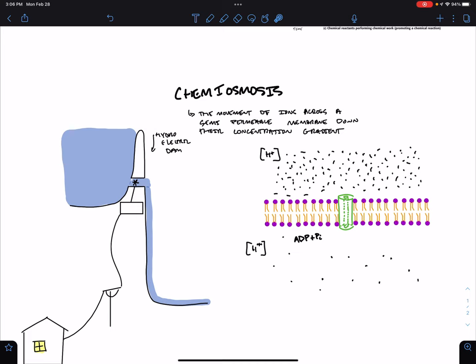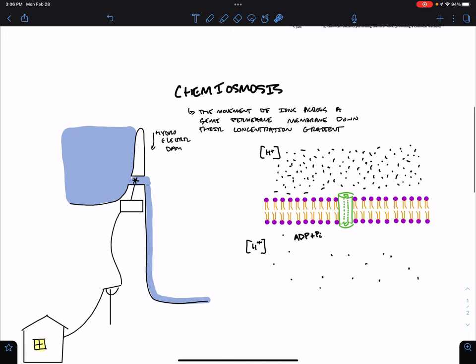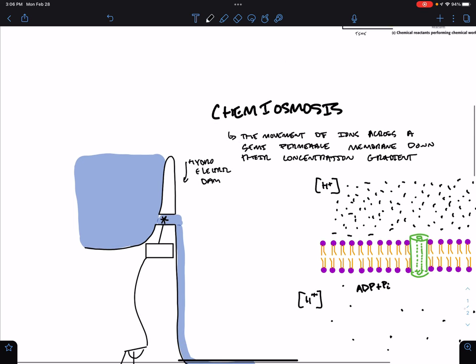So a dam works by taking a river which is flowing from somewhere to an area of lower potential energy, usually the ocean, and damming it up, preventing the water from flowing. So we get this big body of water above the dam which is an area of high potential energy.